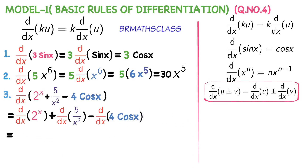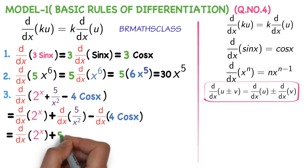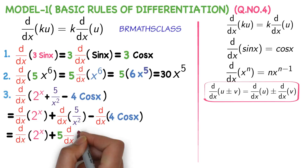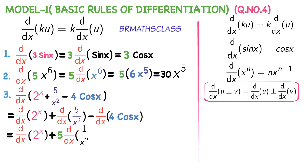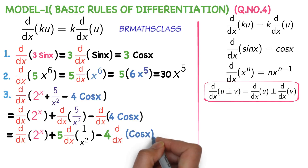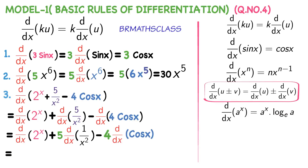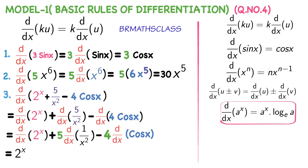Now I will write one more step to simplify this. d by dx of 2 power x plus — 5 by x square can be written as 5 into 1 by x square — so 5 into d by dx of 1 by x square. I just applied the formula of d by dx of ku. Minus, take that 4 outside into d by dx of cos x. Now, the formula: d by dx of a power x is a power x into log a base e. So derivative of 2 power x is 2 power x into log 2 base e, plus 5 into...